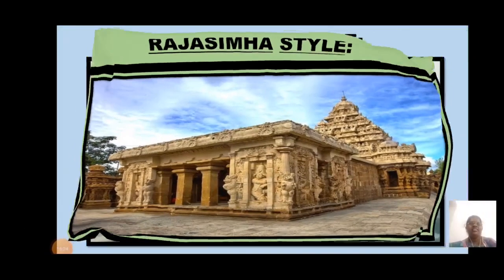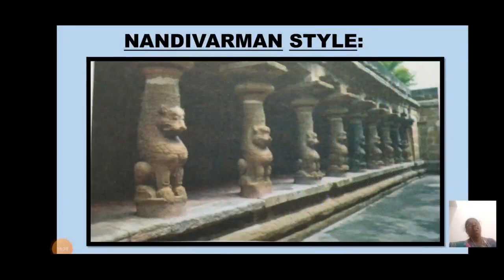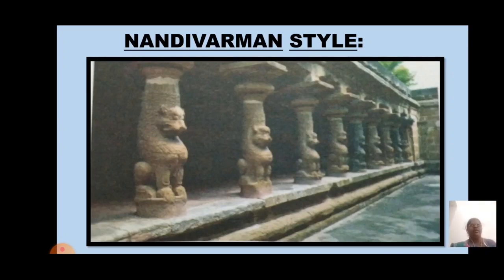The last stage of Pallava architecture — Nandivarman style — is represented by structural temples built by the later Pallavas. The best example is the Vaikunta Perumal temple at Kanchipuram. The Vaikunta Perumal temple is associated with Lord Vishnu — Vaishnavism — while the Kailasanatha temple is meant for Lord Shiva — Saivism. The picture shown is from the Kanchi Vaikunta Perumal temple.